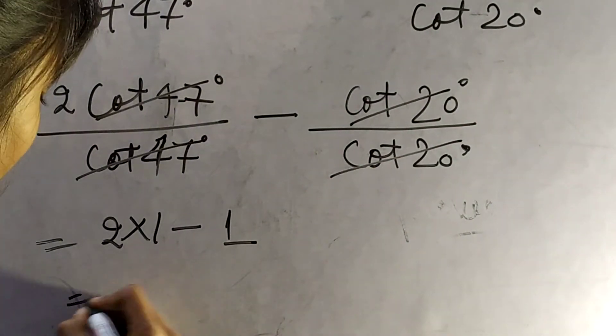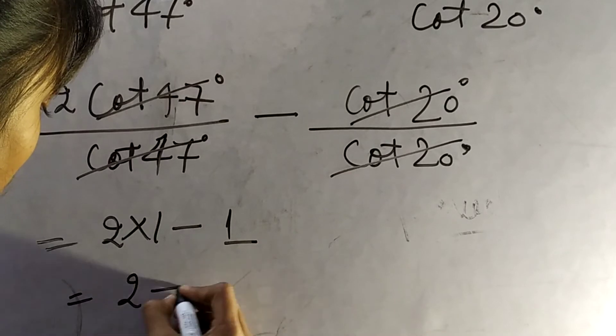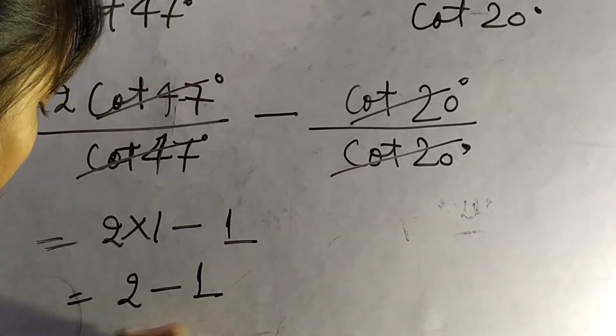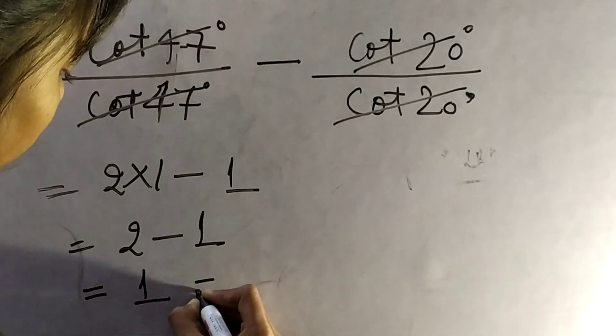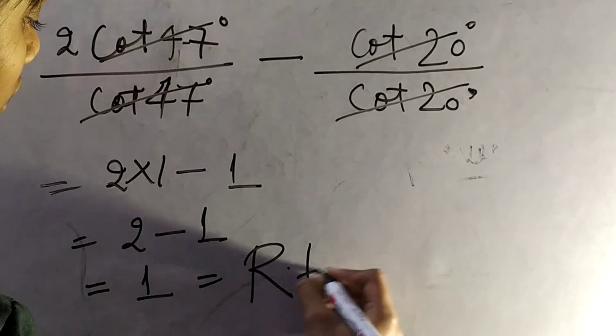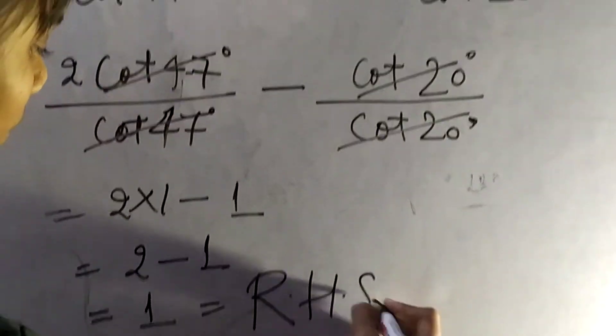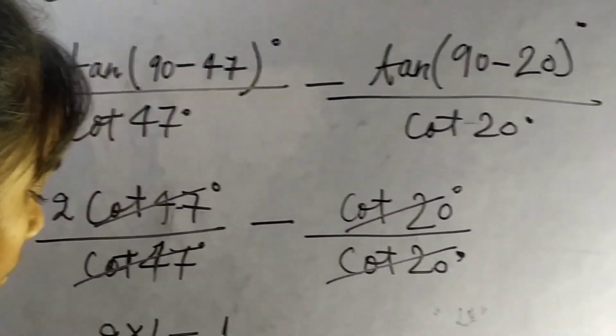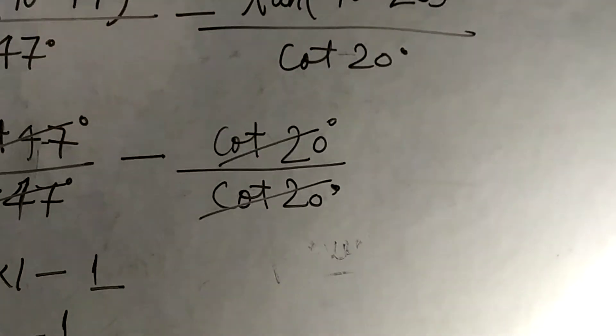So we get 2·1 − 1 = 2 − 1 = 1, which equals RHS. Hence proved. Thank you very much.